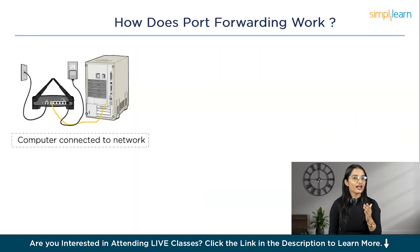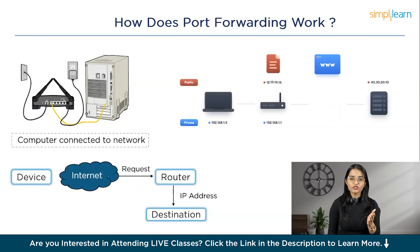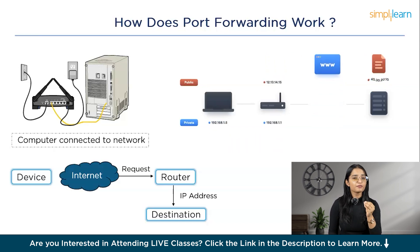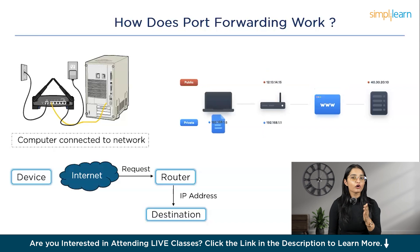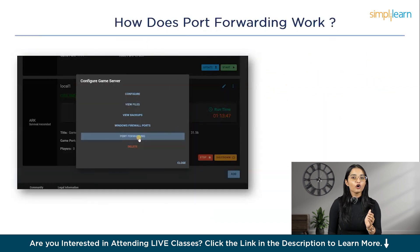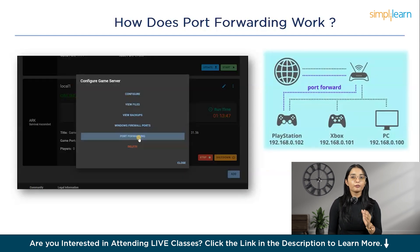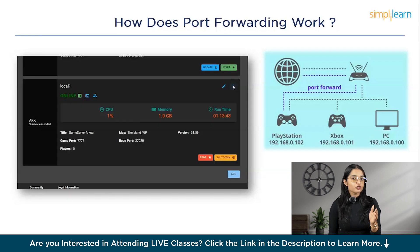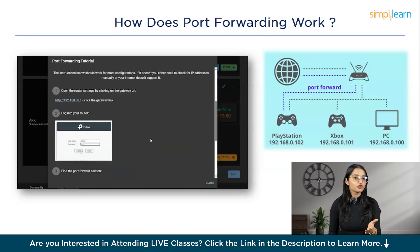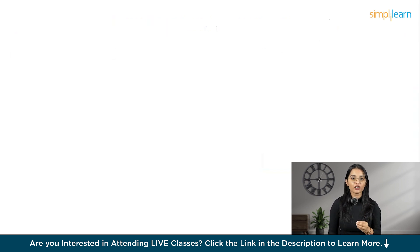So how does port forwarding actually work? When a device on your network, like your computer or gaming console, wants to connect to the internet, it sends requests to your router. This request includes the device's IP address and a specific port number. Your router then maps this information with its own public IP address and a relevant port, and forwards the request to the destination on the internet. For example, if you're hosting a Minecraft game, normally your router blocks incoming connections for security reasons. But with port forwarding, you can tell your router it's okay to let the traffic through so your friends can join the game. The router then maps the external request to the right internal IP address and port, allowing the connection.